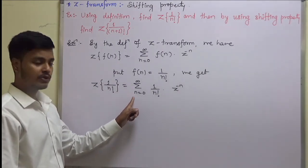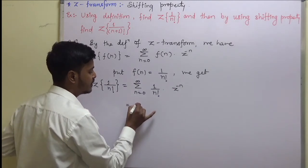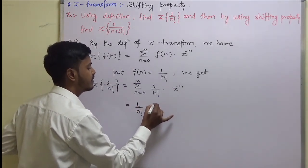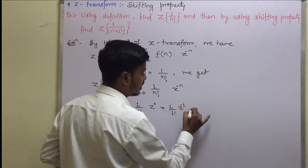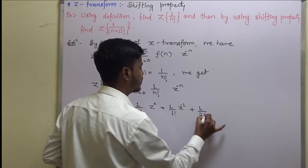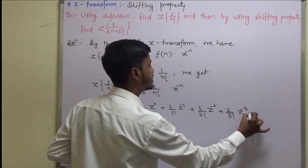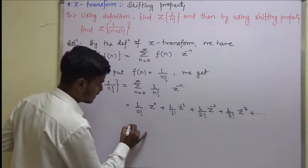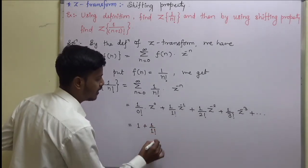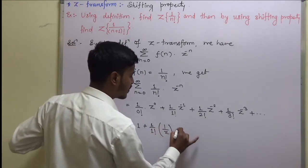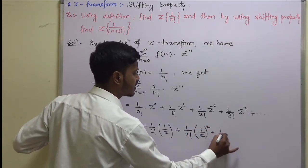Now just expand this by putting n equal to 0, 1, 2, and so on. It would be: 1 upon 0 factorial times z to the power 0, plus 1 upon 1 factorial times z to the power minus 1, plus 1 upon 2 factorial times z to the power minus 2, plus 1 upon 3 factorial times z to the power minus 3, and so on. Writing this out: 1 plus 1/z plus 1 over (2! times z squared) plus 1 over (3! times z cubed), and so on.